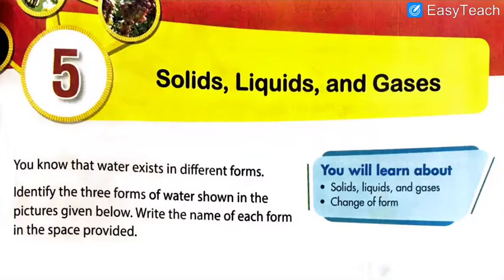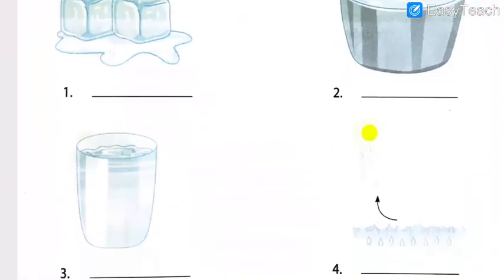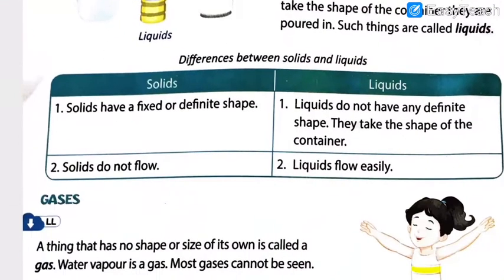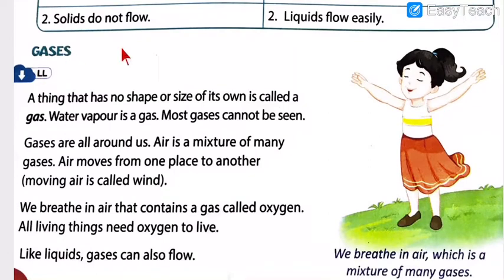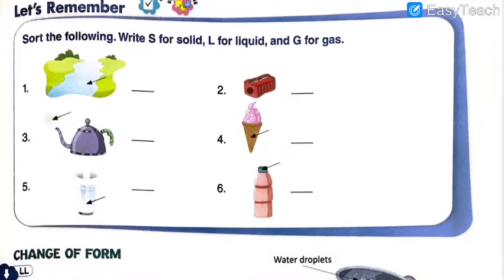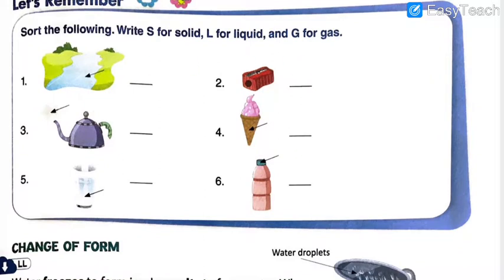Now as you know, my dear little champs, this is the chapter we completed in yesterday's lecture — chapter number 5: Solids, Liquids and Gases. First of all we did the warm-up exercise. Then we understood what is solid, what is liquid, and the difference between solids and liquids, two very important points. Then we understood what is gas. After understanding all three basic concepts we solved a fun-to-do exercise through which you got more detailed knowledge about how to recognize solid, liquid and gas. I hope this concept is clear in your mind.